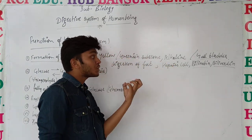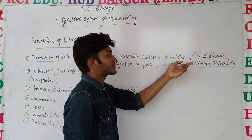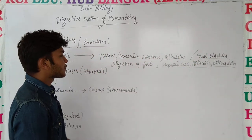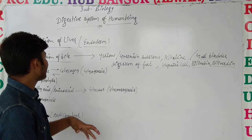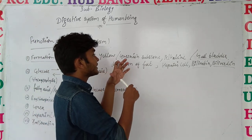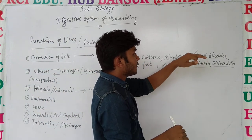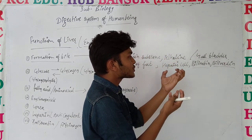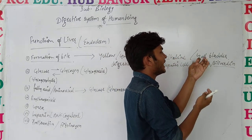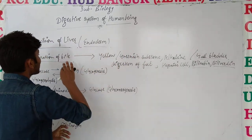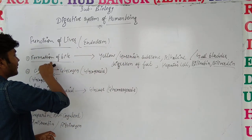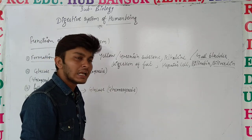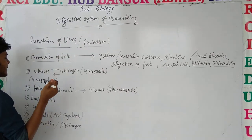The structure which stores the bile is known as the gallbladder. So bile is formed inside the liver and stored in the gallbladder. This is the most important function — the formation of bile which takes place inside the liver.